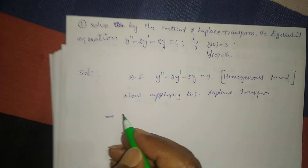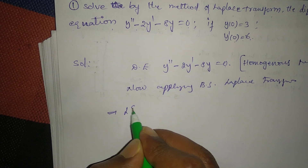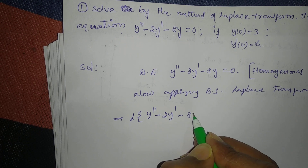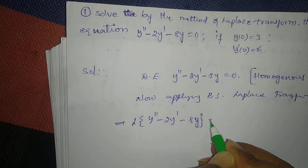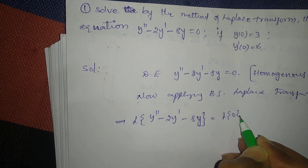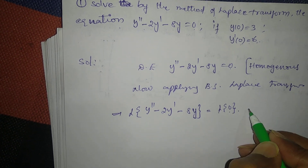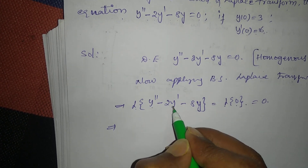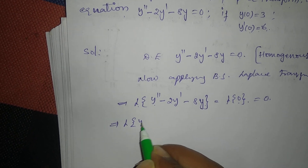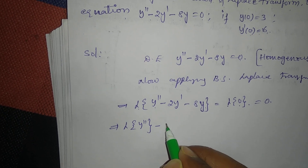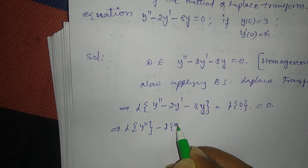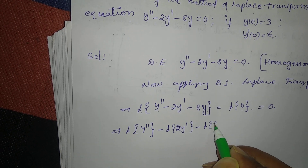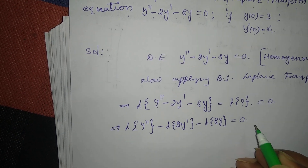That gives L{y''} - 2·L{y'} - 8·L{y} = L{0}. Since L{0} = 0, we have L{y''} - 2·L{y'} - 8·L{y} = 0.